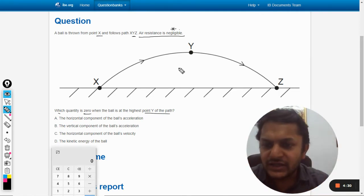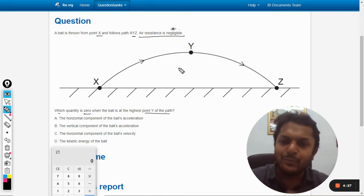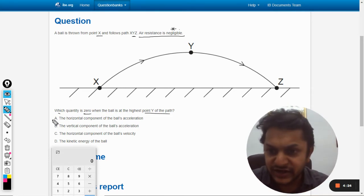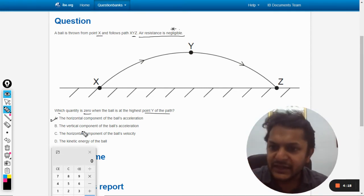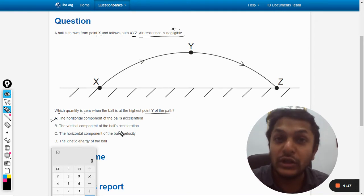Let us go for option number one: the horizontal component of the ball's acceleration. This is the correct answer, I know, but wait a moment, let us go for B, C, D. Option B: the vertical component of the ball's acceleration.